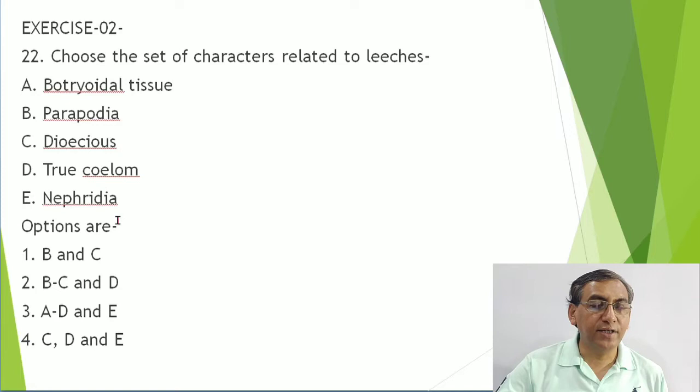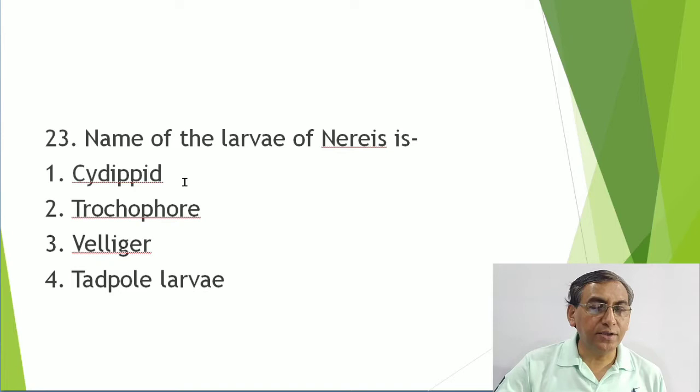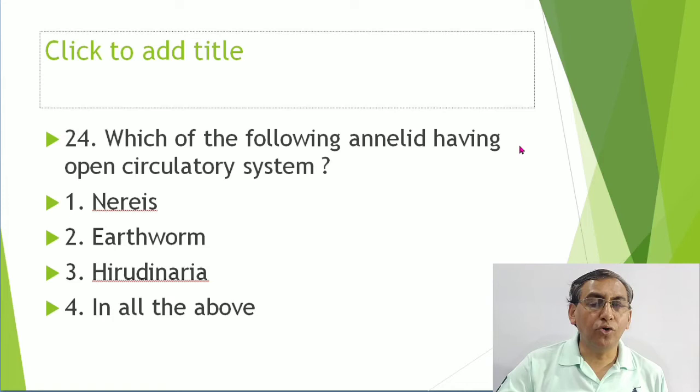The larva of Nereis is the trochophore larva. Cydippid larva is in Ctenophora. Veliger larva is in Mollusca. Tadpole is the larva of frog.